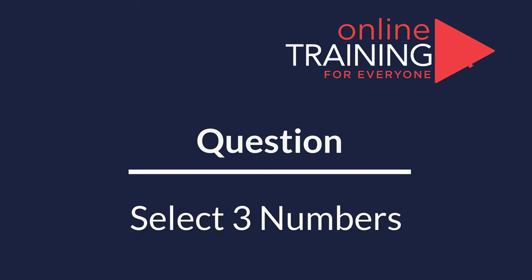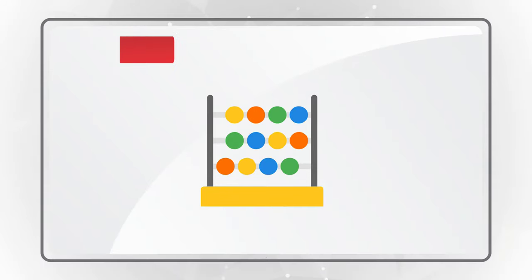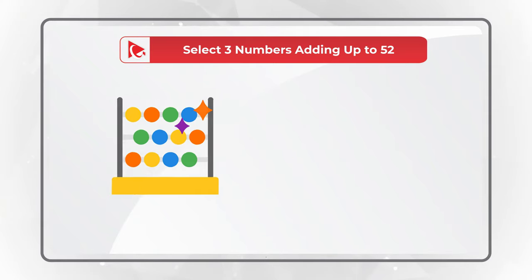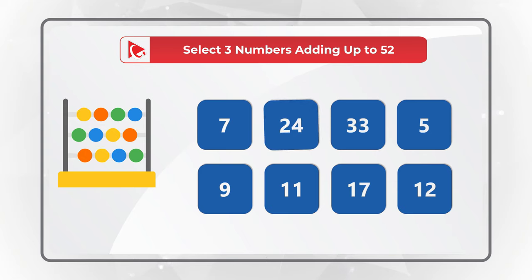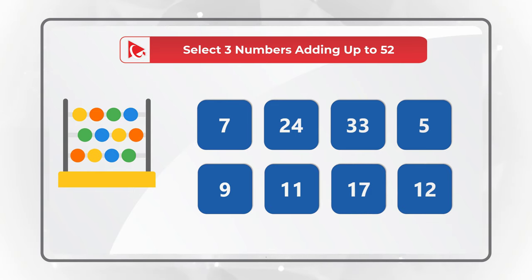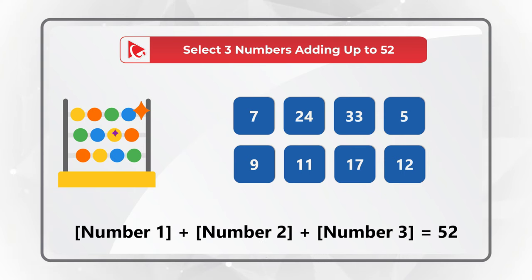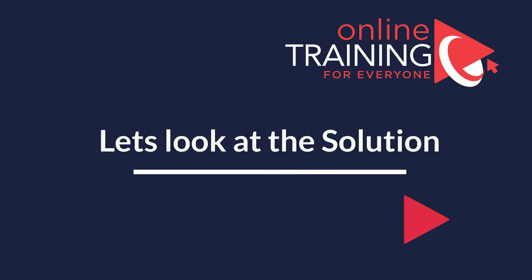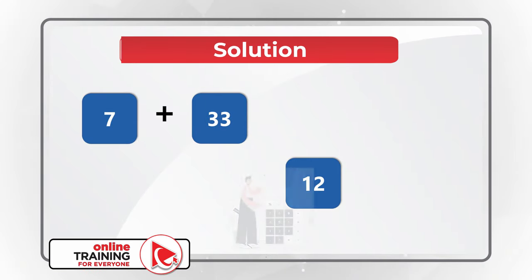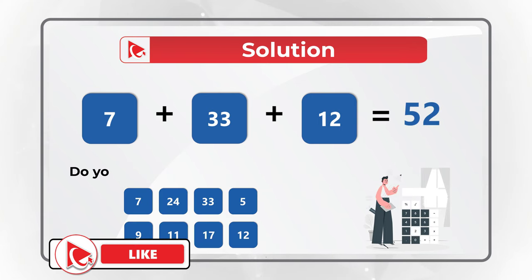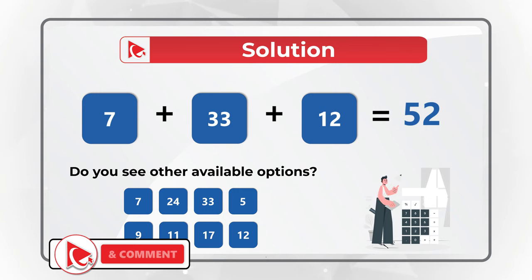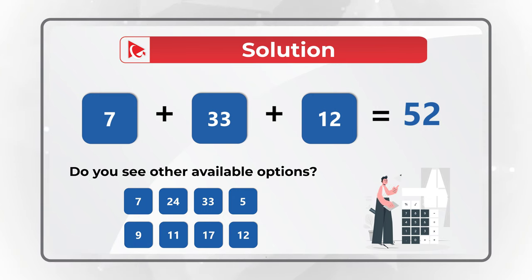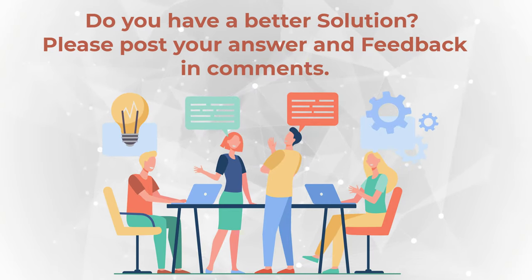Here is an unusual question but we're seeing it on tests more and more often. You need to select three numbers that add up to 52 from eight choices: 7, 24, 33, 5, 9, 11, 17, and 12. Give yourself 10 to 15 seconds. The correct numbers are 7, 33, and 12 because 7 plus 33 plus 12 equals 52. Keep in mind there may be other valid solutions — if you find another set, please post it in comments.